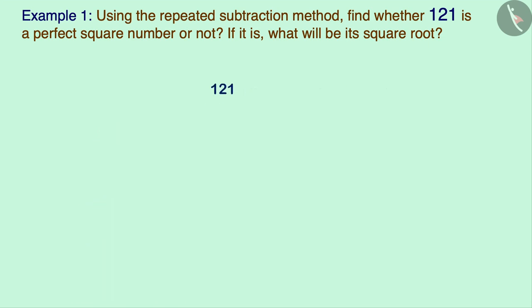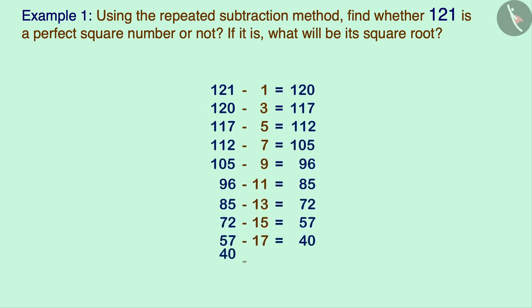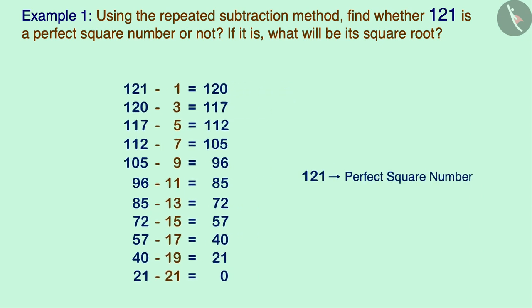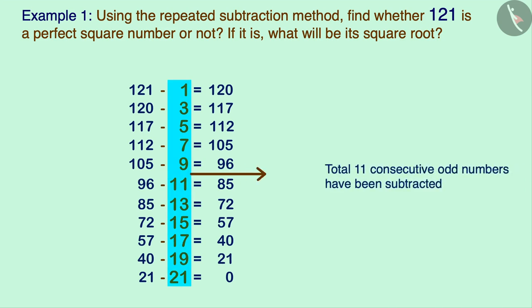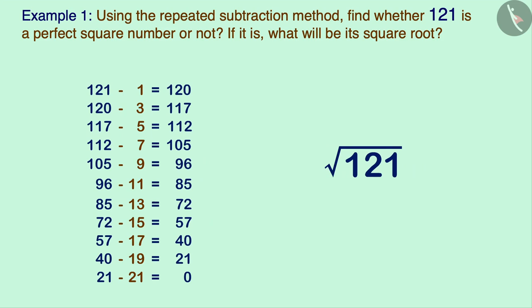We start: 121 minus 1 equals 120, 120 minus 3 equals 117, and we continue subtracting consecutive odd numbers. At the end, 21 minus 21 equals zero. This shows that 121 is a perfect square number. If we do not get zero at the end, the number is not a perfect square. Since a total of 11 consecutive odd numbers were subtracted, the square root of 121 is 11.